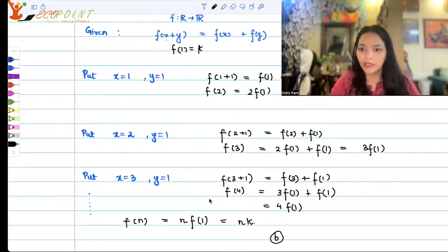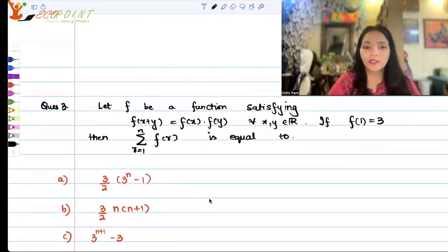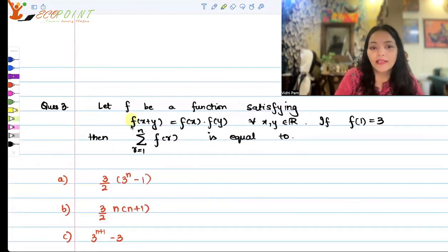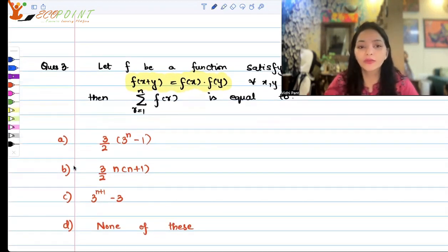Based on similar kind of thing, similar kind of pattern in function, let's work on another question. Let f be a function satisfying—this time, the pattern that I'm trying to look at is f(x+y) = f(x) × f(y) for every x, y belonging to R. If, again, we are given f(1) equals a certain value, this time it's 3, then the summation, the sum of f(r) where r goes from 1 to n is equal to... And these are your options: 3/2(3^n - 1), 3/2 n(n+1), 3(3^(n+1) - 3), none of these.